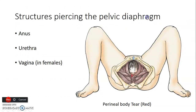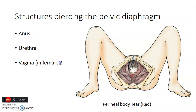This shows a tear of the levator ani during parturition. The pelvic diaphragm, made up of levator ani and coccygeus, is perforated by the anus, urethra, and the vagina.